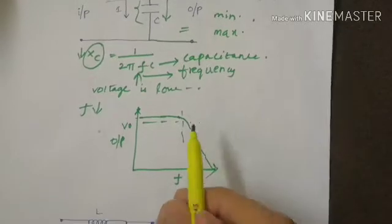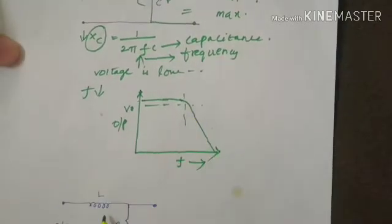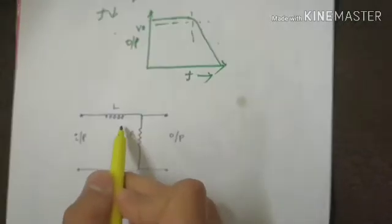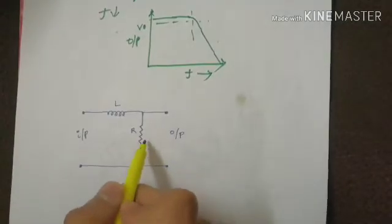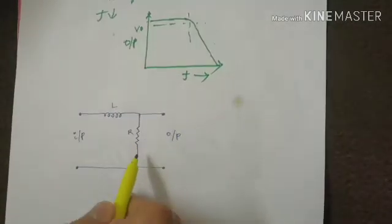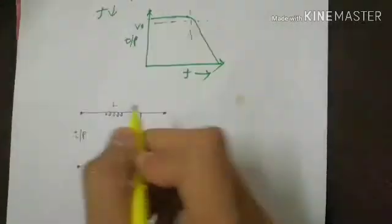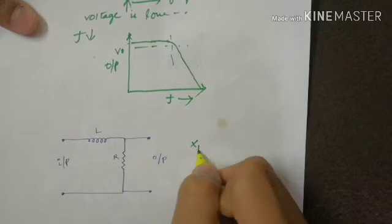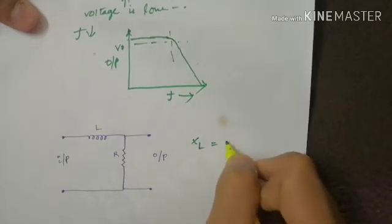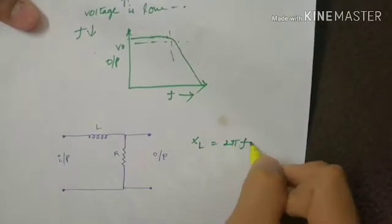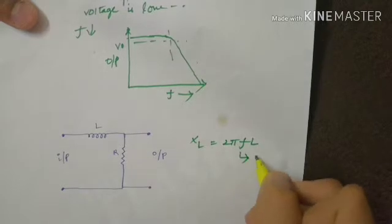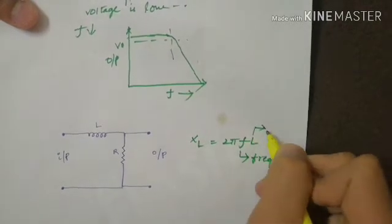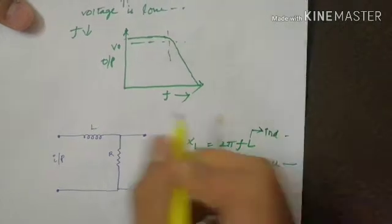We can get same output by connecting an inductor in series with the resistor and taking output across this resistor. Inductive reactance is given by 2πfL where f is frequency of our input signal and L is inductance of this inductor.